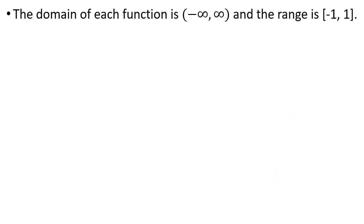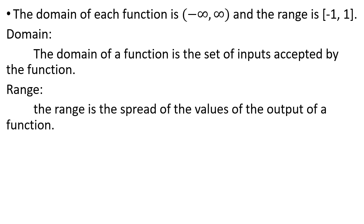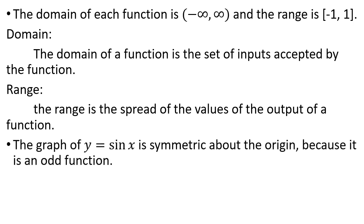The domain of each function — sin and cos — is minus infinity to infinity, which means all real numbers. The range is the closed interval minus 1 to 1. Domain means input values, range means output values. For sin: domain is all real numbers, range is the closed interval minus 1 to 1.